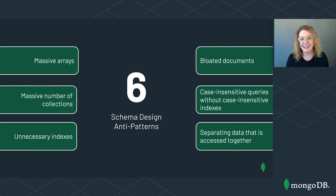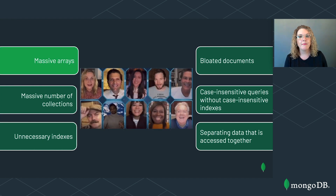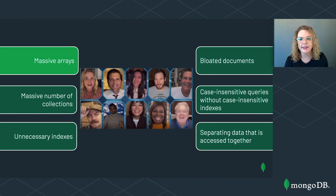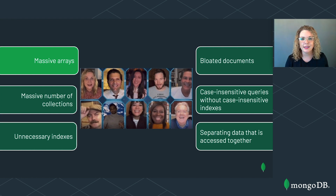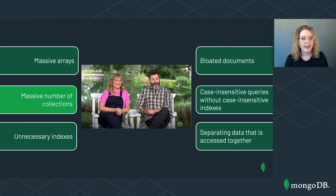We have made it through all six anti-patterns. Let's review them. First up: massive arrays. This anti-pattern refers to storing massive, unbounded arrays in your documents. We talked about how to store information about employees and the buildings where they work, and introduced our rule of thumb: data that is accessed together should be stored together. Remember, we don't want to store information in massive, unbounded arrays.